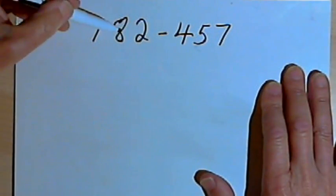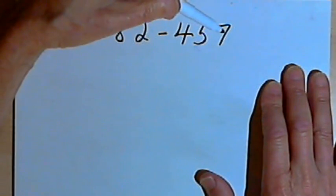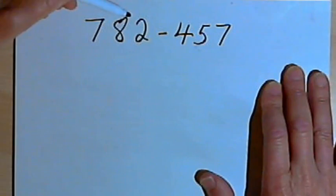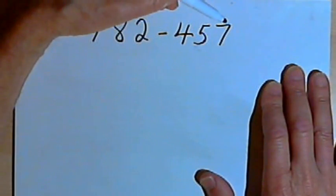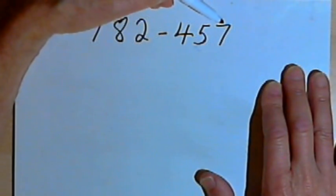So here I've got 782 minus 457. And the first thing I want to do is take the 1s column, the units column, in the number I'm subtracting away, and turn that into a 0.